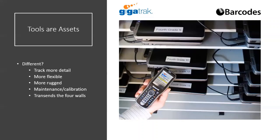You generally track more details with a tool tracking solution. With asset tracking, it's very common to use barcodes to manage the asset. In tool tracking, you might use a barcode, but you might also use the company's internal asset number, the serial number of the asset itself — like the serial number on a drill — or RFID tags on the tools.